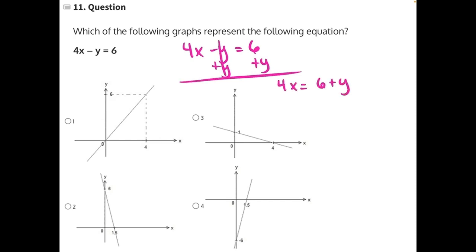And now to isolate y, we need to get rid of the 6. It is positive, so a negative 6 or subtracted 6 would be the opposite, leaving us with 4x minus 6 equals y. Or to make it look just like slope-intercept, y equals 4x minus 6.